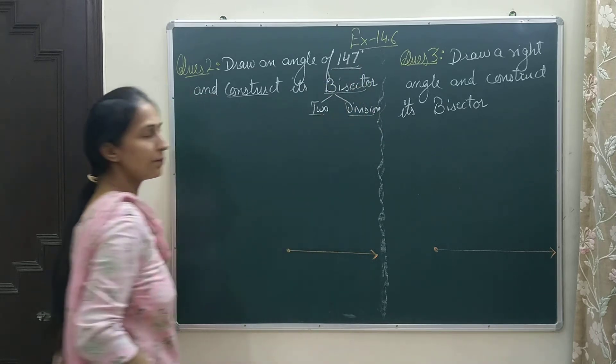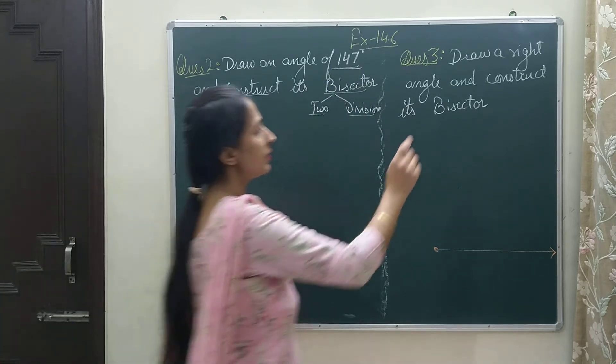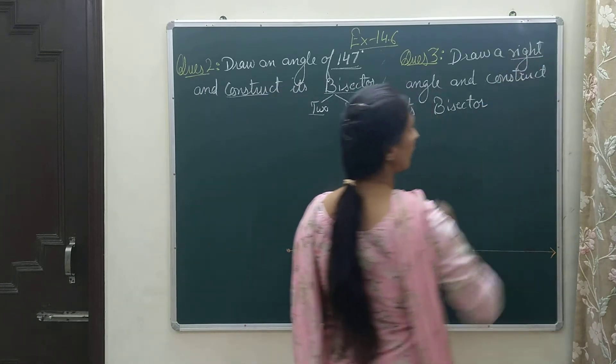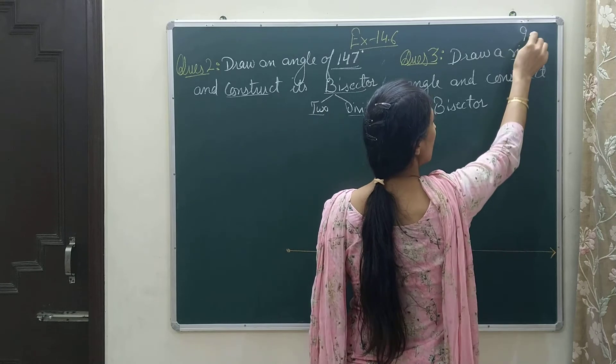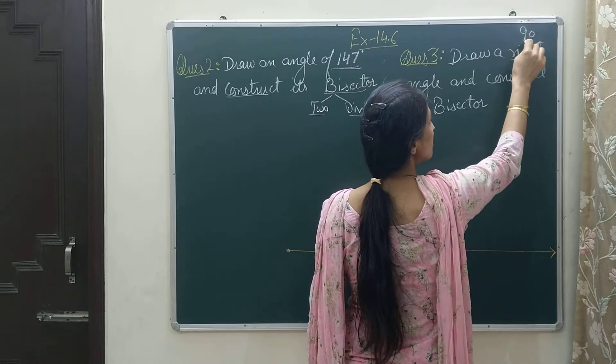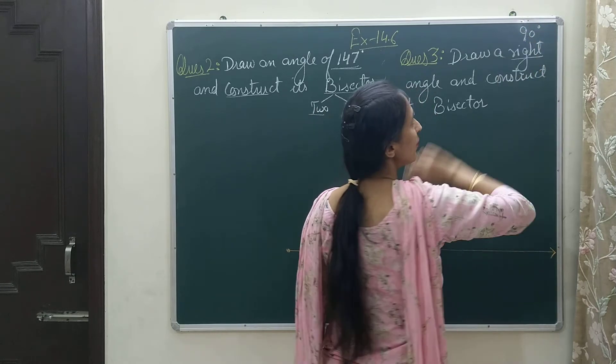I will draw a right angle now. Right angle should be clear to you. If there is some question about right angle in the exam, right angle is always 90 degrees.